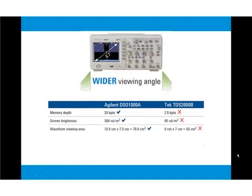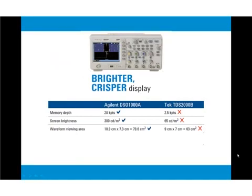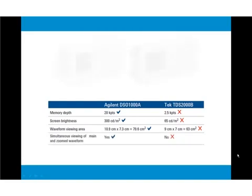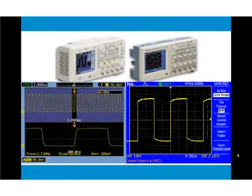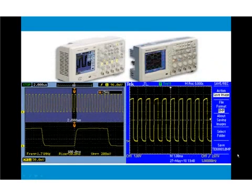A 5.7 inch diagonal color QVGA TFT LCD display gives you a noticeably brighter and crisper waveform. A wider viewing angle lets you see the display even when you're not directly in front of the unit. With simultaneous viewing of both the main and zoomed waveform, you see the big picture and the details at the same time.